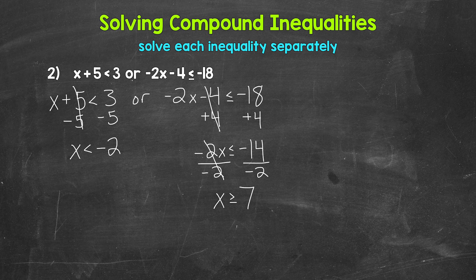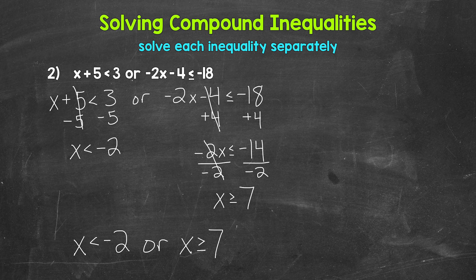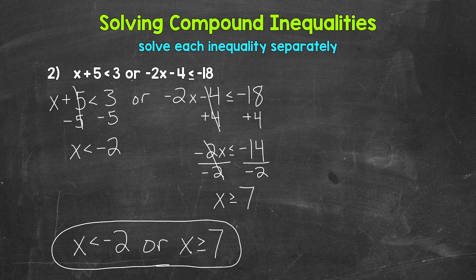Now we are done solving our two inequalities, and we can rewrite everything as a compound inequality. We have x is less than negative 2 or x is greater than or equal to 7. Any number less than negative 2 or greater than or equal to 7 is a solution of this compound inequality — it will make it true.